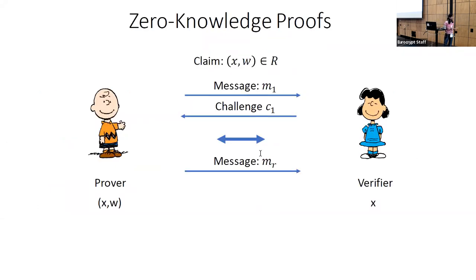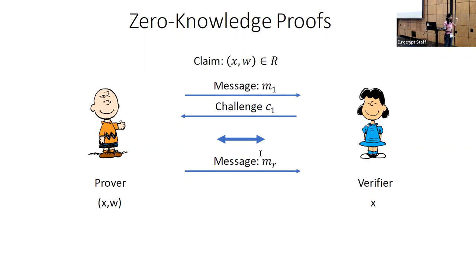To start with, what is zero-knowledge proofs? It consists of two parties, a prover and a verifier. The prover owns a secret input witness W, and claims that public statement X together with W is in some relation R. The prover and the verifier go through an interactive protocol where the prover sends messages and the verifier tosses coins and sends back challenges.